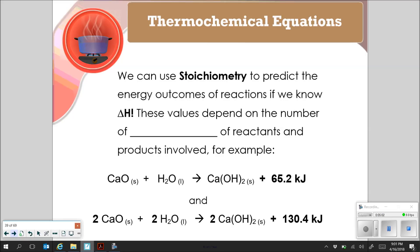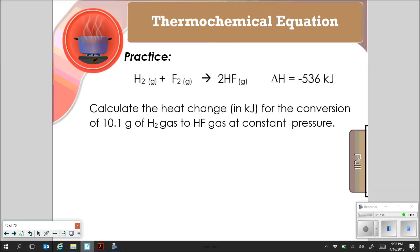So when we're doing thermochemical equations, we can actually go back to stoichiometry and use that to predict the energy outcomes of the reaction if we know the enthalpy or the change in H. These values are going to depend on the number of moles of the reactants and the products involved. For example, down here, we've got a 1 to 1 to 1 ratio with 65.2 kilojoules as my energy release. If I make that a 2 to 2 to 2 and multiply everything by 2, note that my kilojoules doubles as well. So it goes from 65.2 to 130.4 kilojoules because that value of energy gained or lost is going to be dependent on the number of moles.